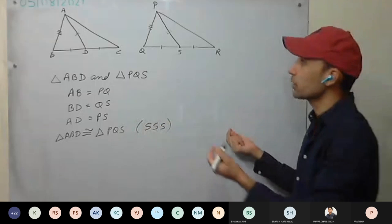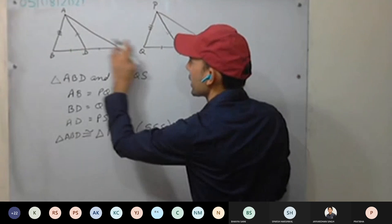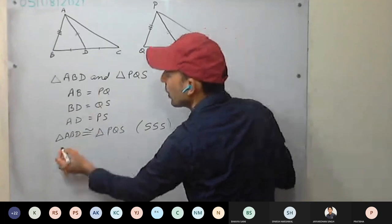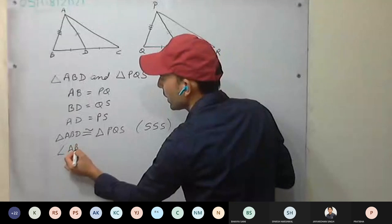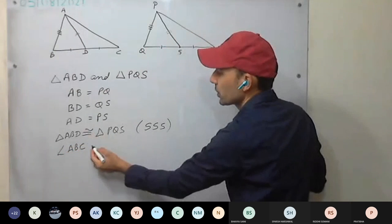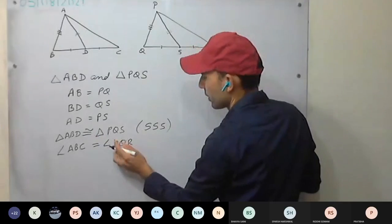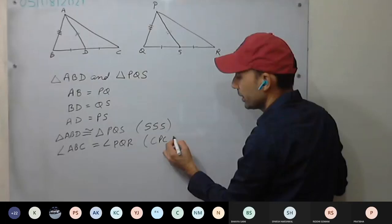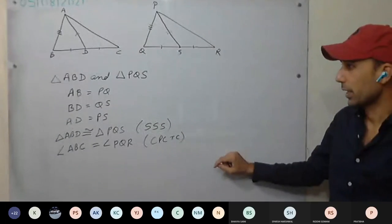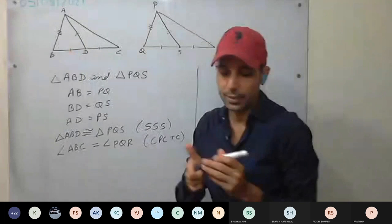We have proved them to be congruent. And what we require to prove triangle ABC congruent to triangle PQR is this angle. So from here we are going to get this angle. Angle ABC — you can write angle ABC — equals angle PQR, by CPCTC. Now you have got this angle equal to this angle.